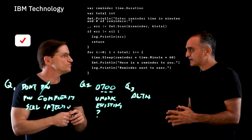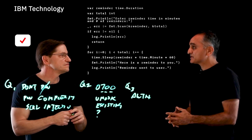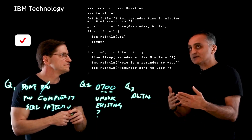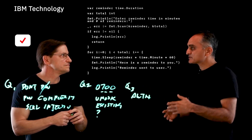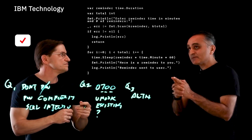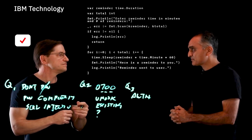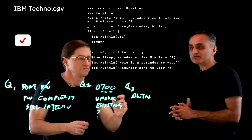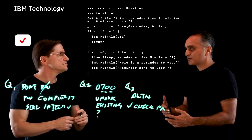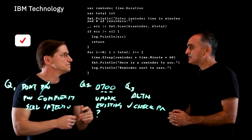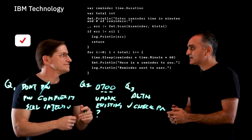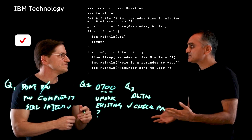We're using sleep here just for simplicity. In real life, in Golang you may be using goroutines, a thread running, a daemon running, sending reminders for as long as the app is running. What if somebody passes a negative value or zero? We're not checking it. So instead of one hour or 10 minutes or whatever you desire, it's going to send instantly because it's zero or negative.